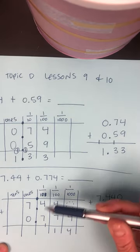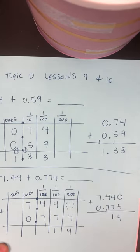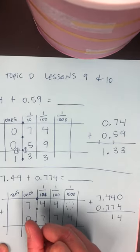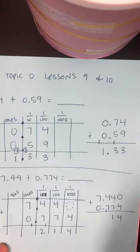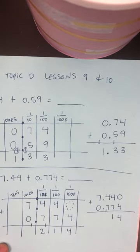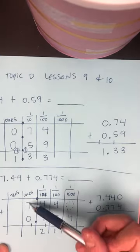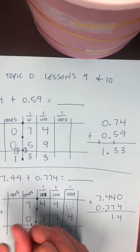And my tenths place, seven, eight, nine, ten, eleven, plus that one that I bundled is twelve. So, I'm going to bundle ten and I have two left. So, my ten tenths made one whole. So, seven plus one is eight.